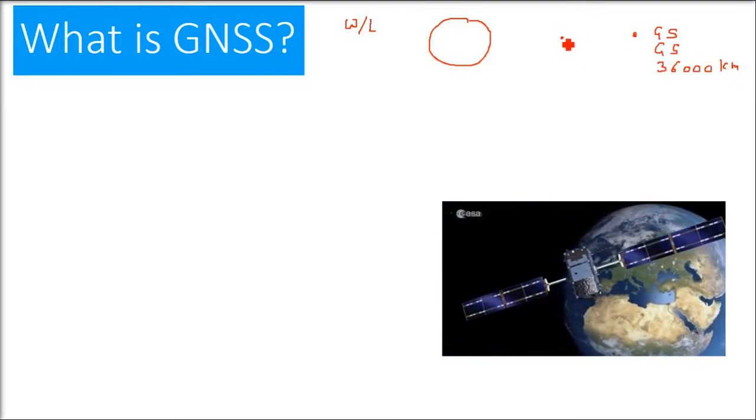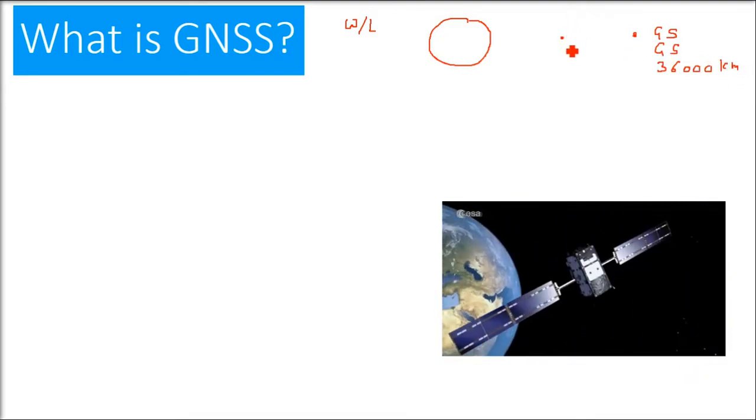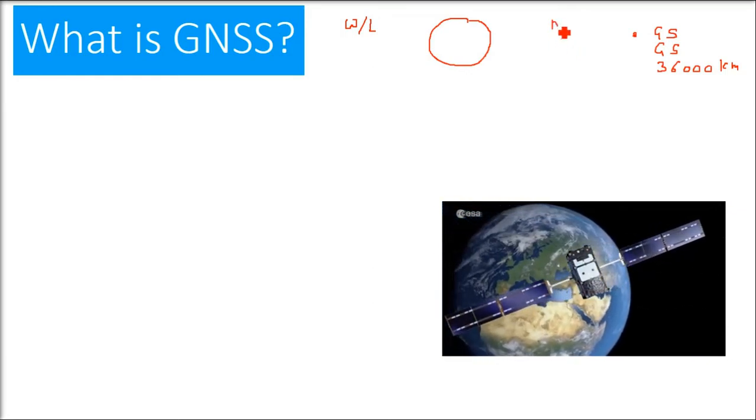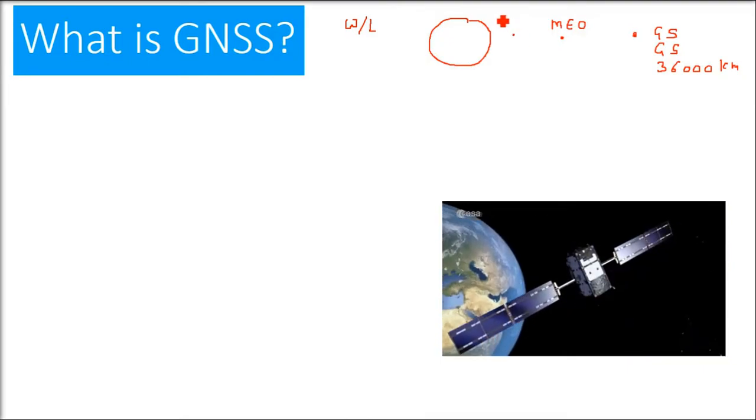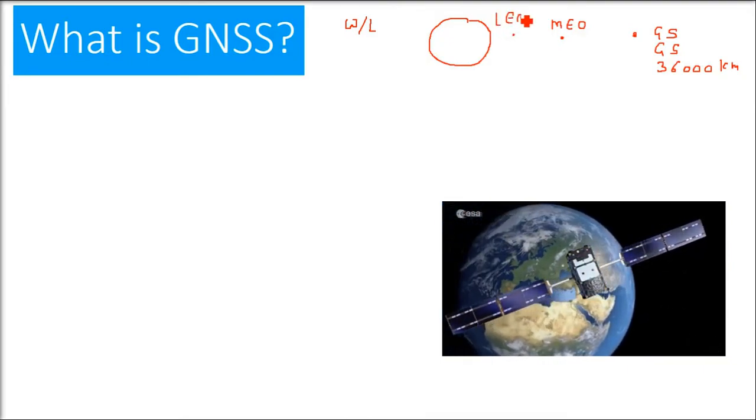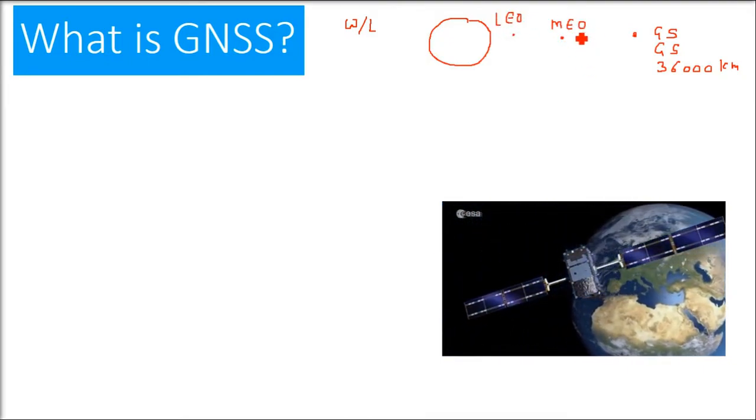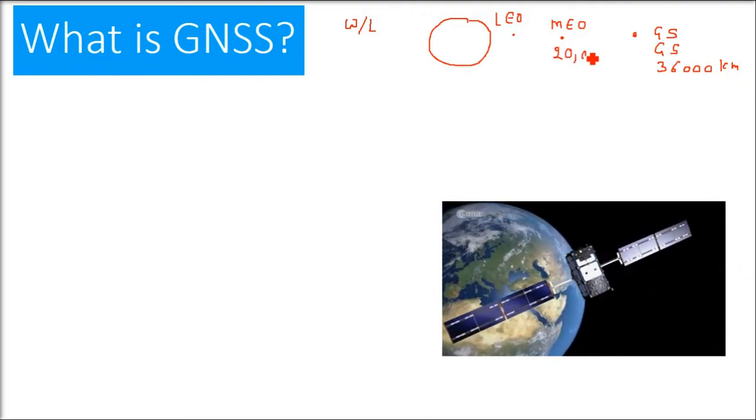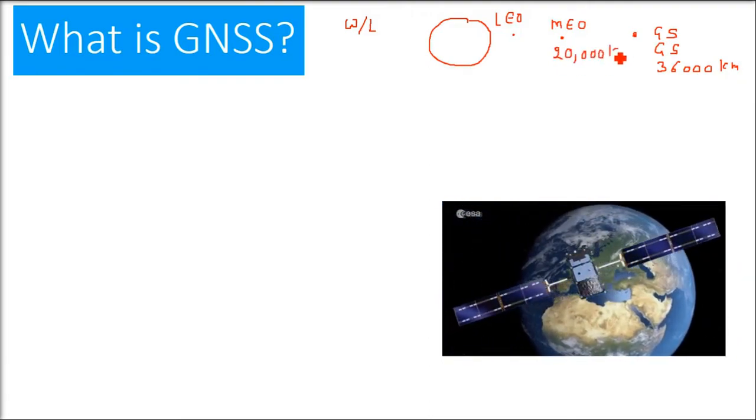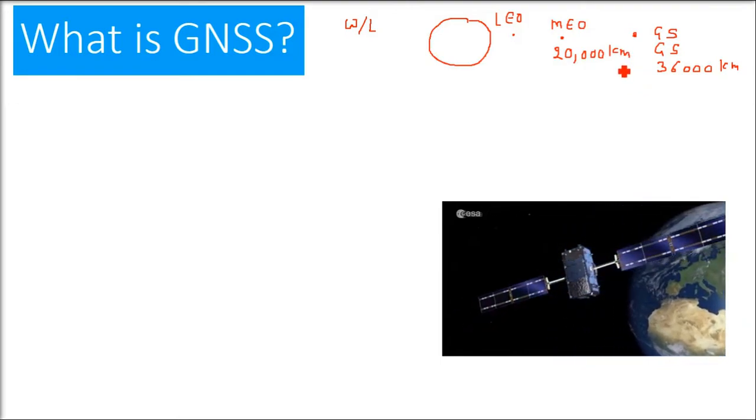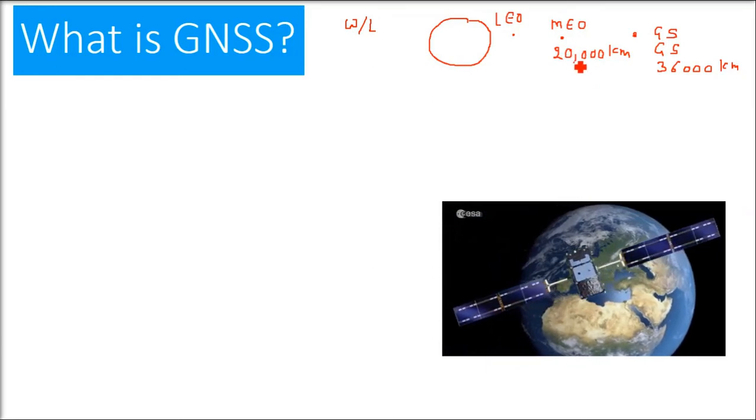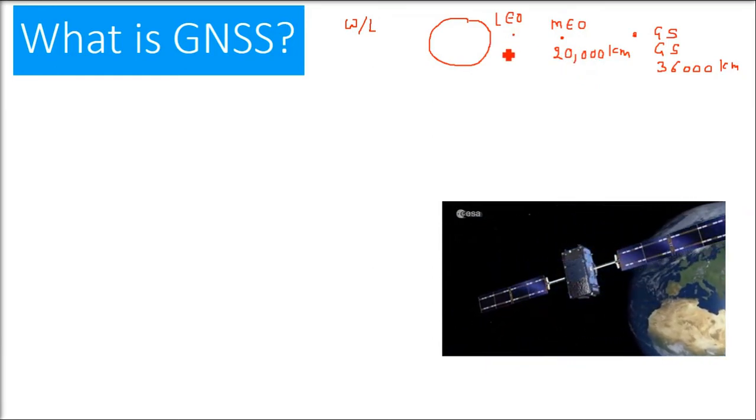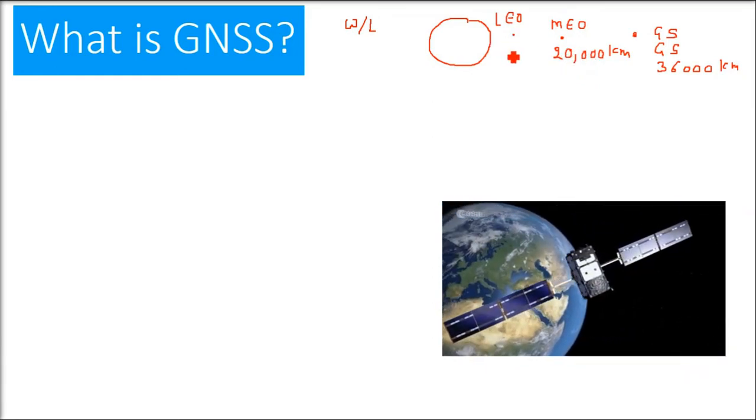At this distance we have geostationary or geosynchronous orbit. Then we have the Middle Earth Orbit (MEO), and then we have Low Earth Orbit (LEO). Middle Earth Orbit is around 20,000 kilometers - this is not the exact figure, as the height from Earth is somewhat different for different satellites.